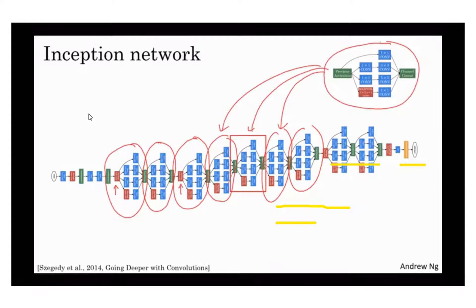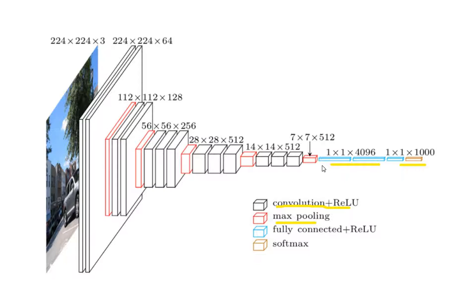The network consists of blocks, and the blocks consist of operators — that's how the Inception network's big architecture is created. There is also the concept of transfer learning. In transfer learning, we freeze the first layers and only train the last few layers to classify for our own task. Those early layers have already learned about lines and edges. If we want to classify cats and dogs, the structure of cats is also made of edges and lines, so we can train only the last layers.